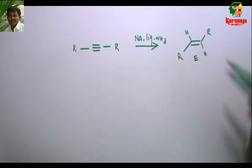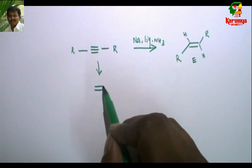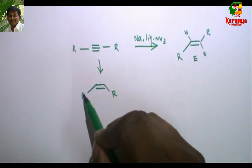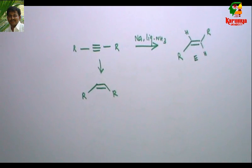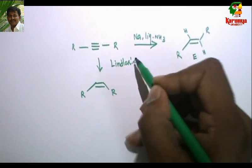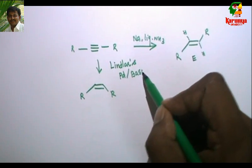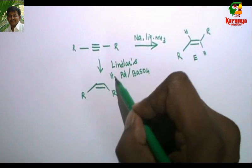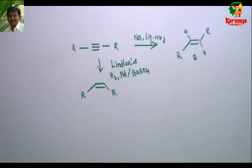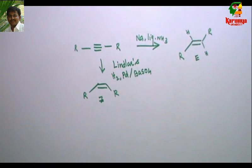Hydrogen has been added in a trans fashion. Is it possible to get cis-olefin from an alkyne? Yes, it is possible — but not via sodium in liquid ammonia. You can get cis-olefin by using Lindlar's catalyst, which is palladium poisoned with barium sulfate. If you use Lindlar's conditions you get Z-olefin; if you use sodium in liquid ammonia you get E-olefin.